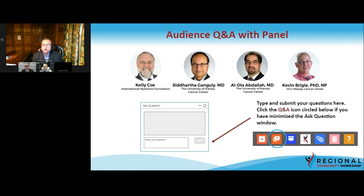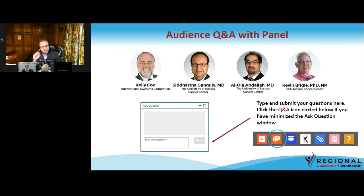Question: Are there new treatment options for patients with smoldering myeloma who are not high risk? First, regarding high-risk smoldering myeloma: the standard of care in 2021 is still no treatment, but patients with high-risk smoldering myeloma have a very high risk of progressing to multiple myeloma. Many centers are starting treatment with Revlimid-dex — the Spanish trial showed overall survival advantage. For patients without high risk, I know of no treatment options, because treatments are not without risk, and not everybody will progress to multiple myeloma.